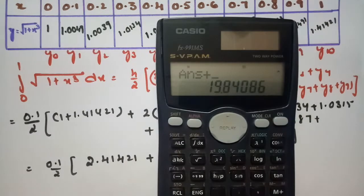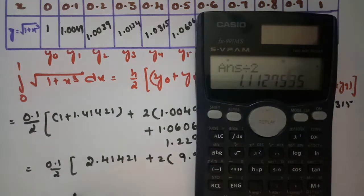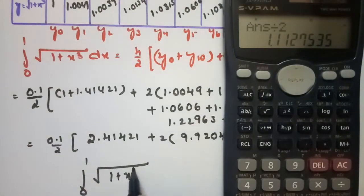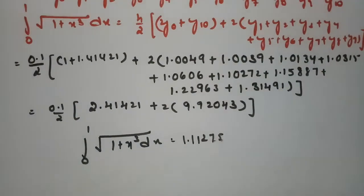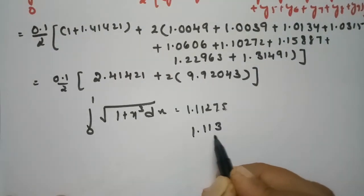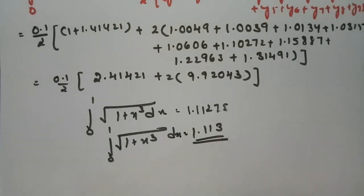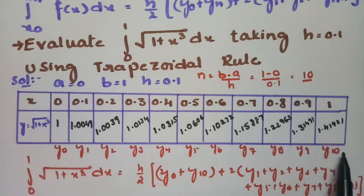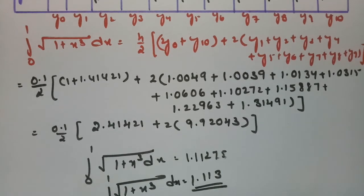The value of the integral from 0 to 1 of √(1+x³) dx is equal to 1.11275, which is approximately 1.113. This is the final answer. By filling in the table, labeling y0 through y10, and substituting into the trapezoidal formula, you get the answer. Thank you for watching — please practice and you can score more.